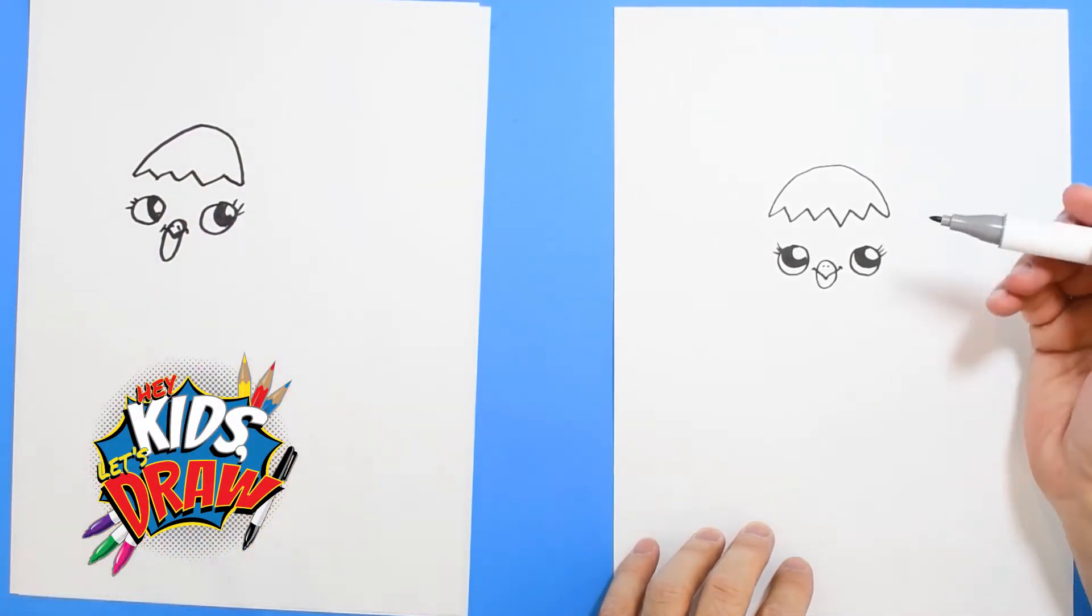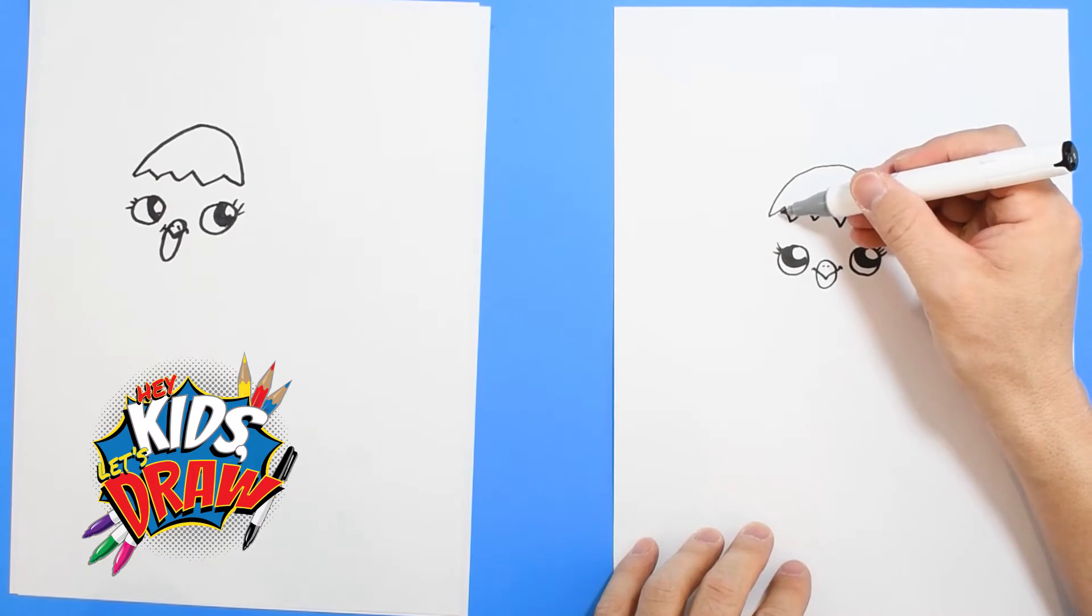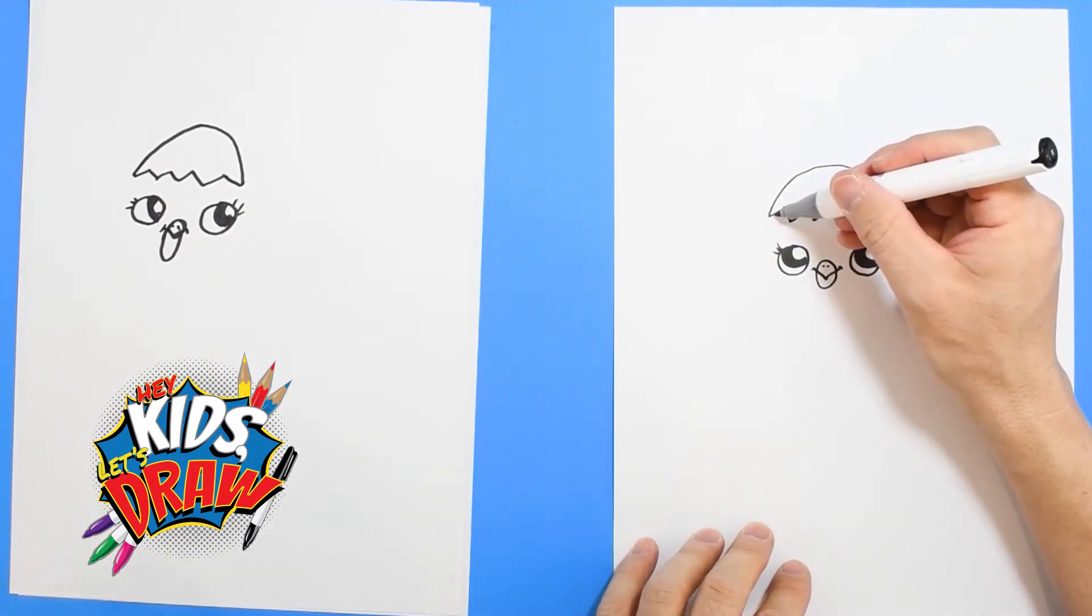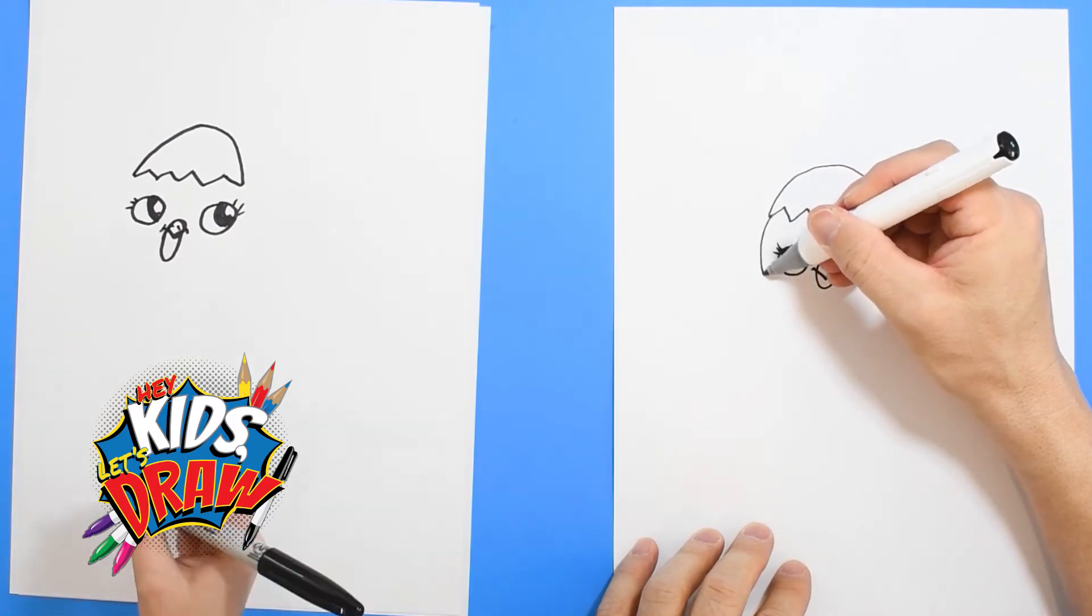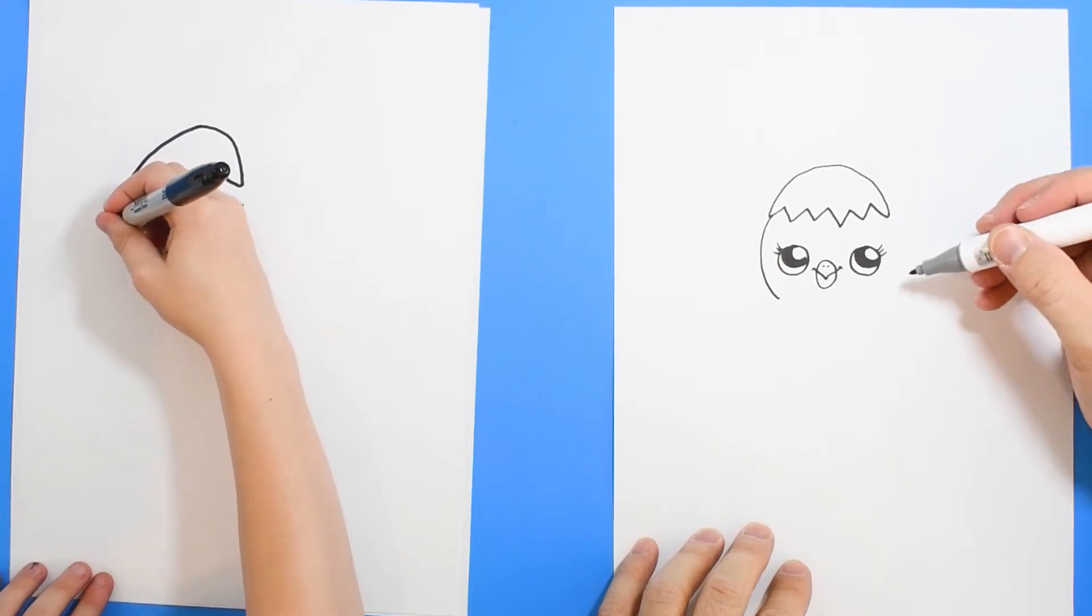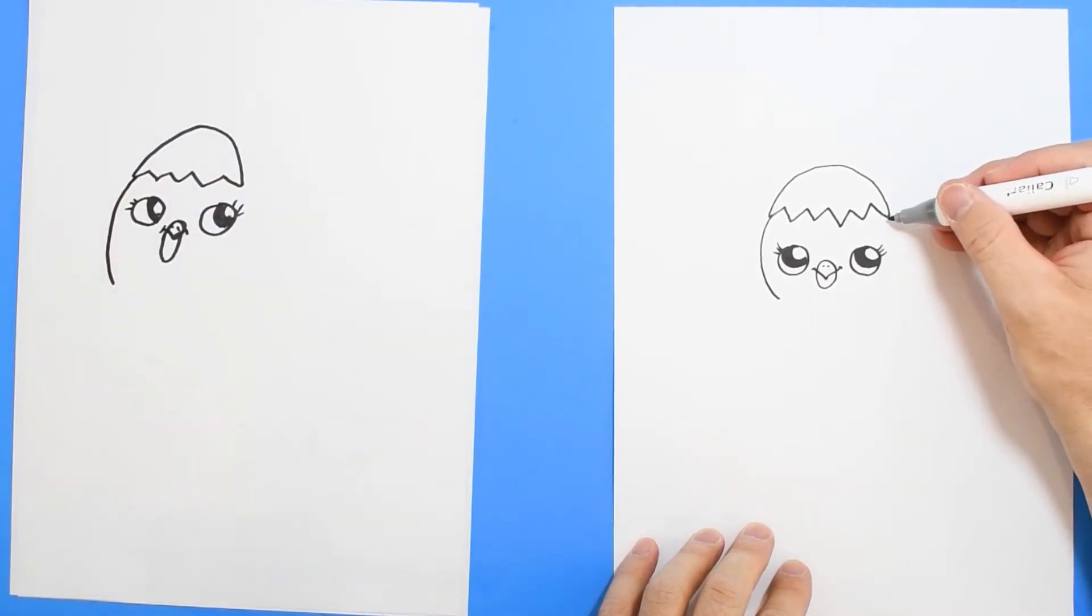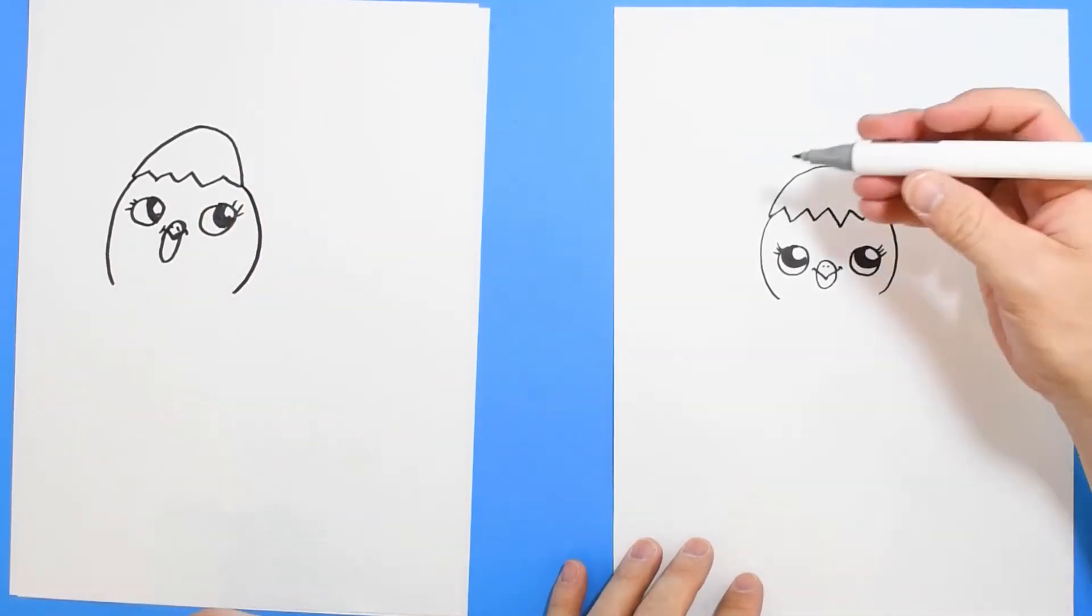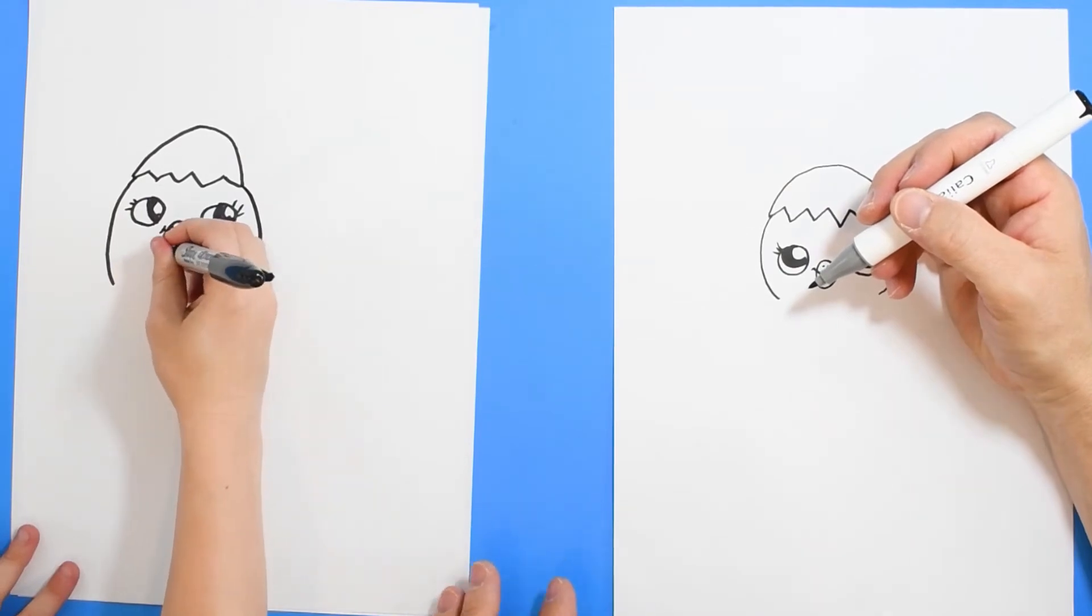Looking good. So now out of this cracked egg we're going to draw the head, the big round head of the chick. I'm going to start on this edge and come out over. On this side I'm going to do the same thing, come over and down.